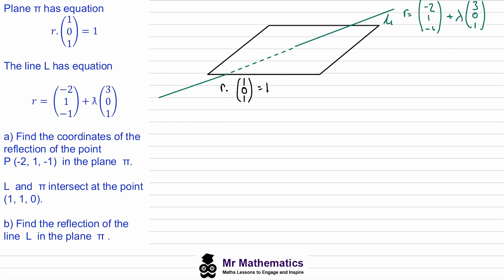Notice that the coordinates of our reflected point P is a position vector on our line, so this point lies on the line. When we reflect this point in the plane, it goes through the plane to the other side, the same distance on the other side, and we'll call this point Q. We know the line connecting the two will be perpendicular to the plane.